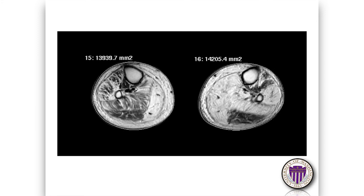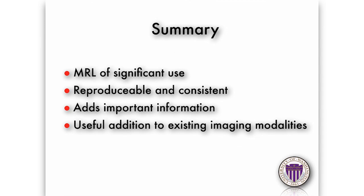Another patient came with bilateral lower extremity lymphedema, and when we imaged him we found fatty degeneration of the musculature in his legs. This was why his lymphatic system wasn't working — the lymphatic system was actually in continuity, but without any muscle pump action the fluid wasn't getting shifted out of his leg. Again, MRI was able to diagnose this where other modalities would not have. In summary, MRI is very significant — it's reproducible and consistent, adds very important information, and is a useful addition to the existing modalities that we all use. Thank you.